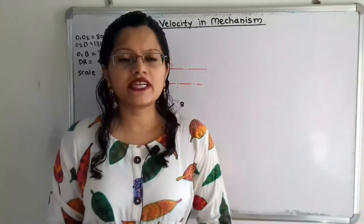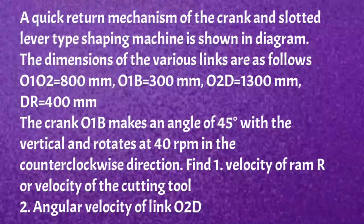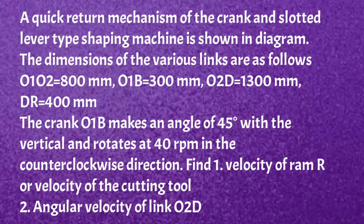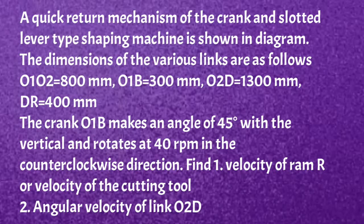First I will read what is the given problem. A quick return mechanism of the crank and slotted lever type shaping machine is shown in the diagram. The dimensions of various links are as follows: O1-O2 = 800 mm, O1-B = 300 mm, O2-D = 1300 mm, D-R = 400 mm. The crank O1-B makes an angle of 45 degrees with vertical and rotates at 40 rpm in counter-clockwise direction. Find the velocity of ram R (the cutting tool) and angular velocity of link O2-D.